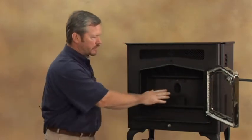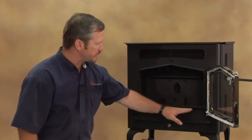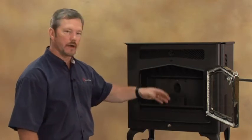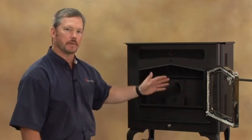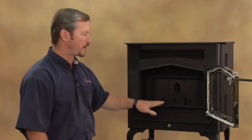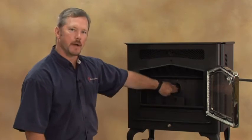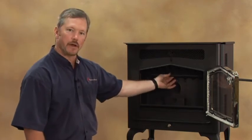Inside the firebox, you'll notice several things. There's the air wash, which brings hot air up over the inside of the glass to keep ash off so you can see your fire. You'll have your fire pot, ash pan, drop tube, and the cleaner for your rod.